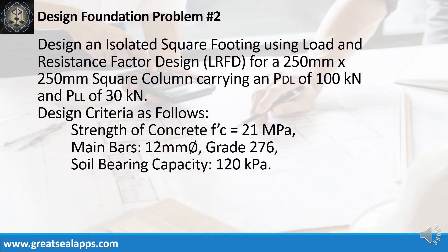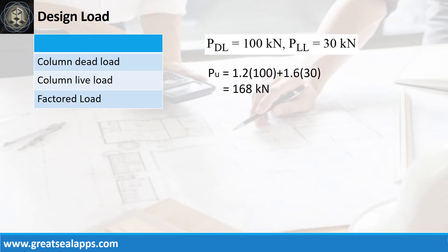Design criteria: strength of concrete is 21 MPa, main bars are 12 mm bar at grade 276, and soil bearing capacity is 120 kPa. The footing carries an actual dead load of 100 kN and actual live load of 30 kN, for a factored actual load of 168 kN.